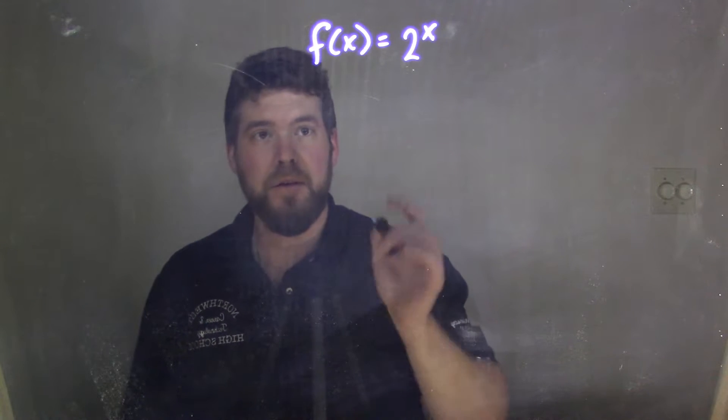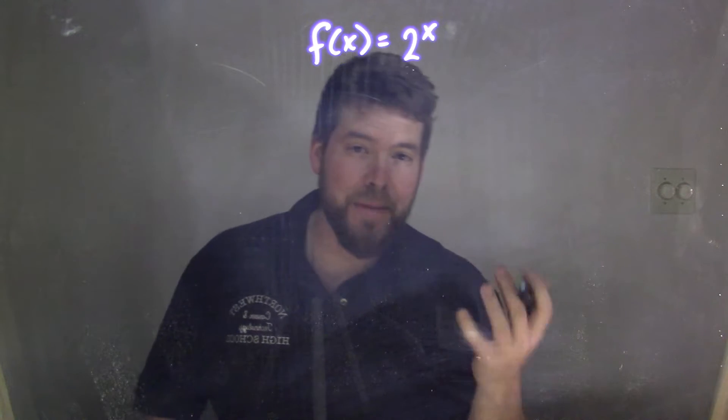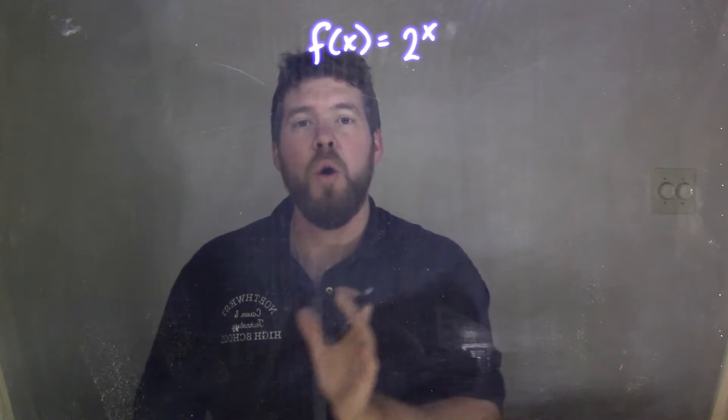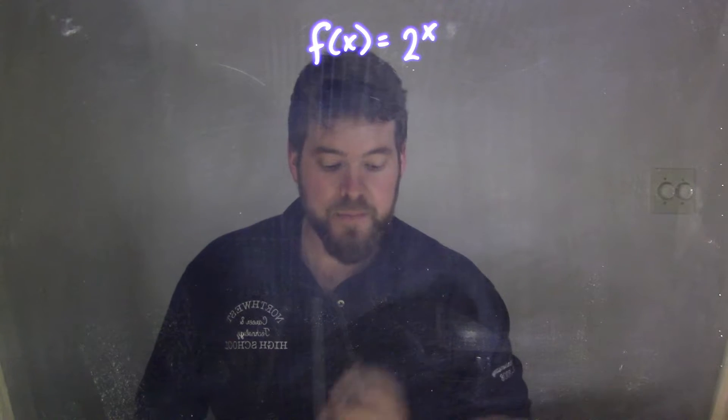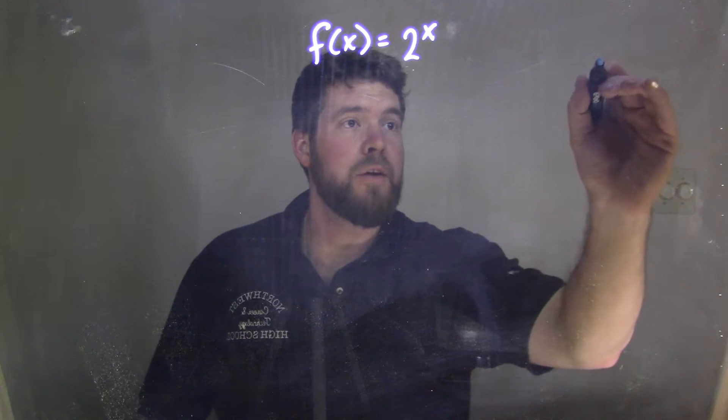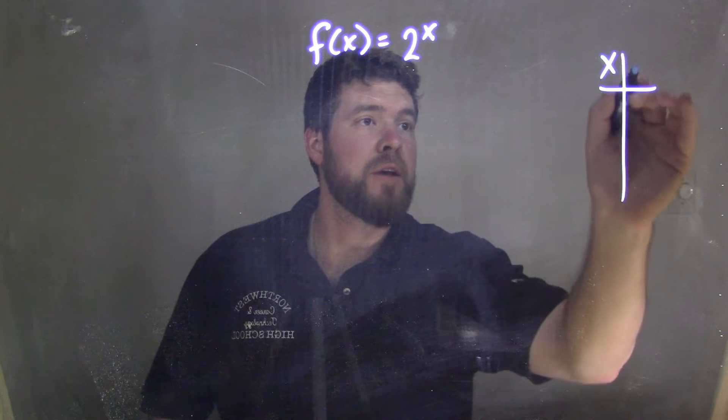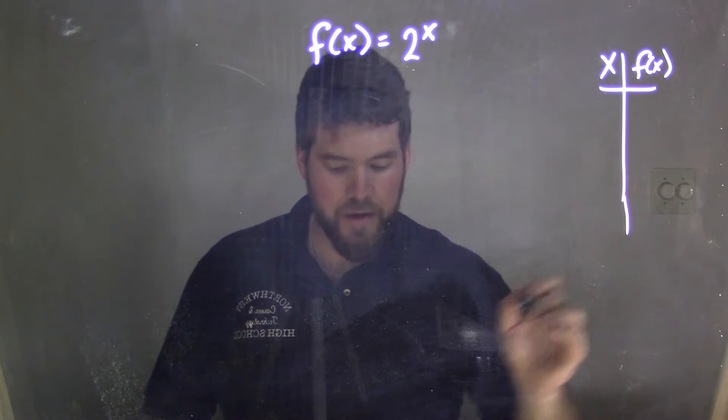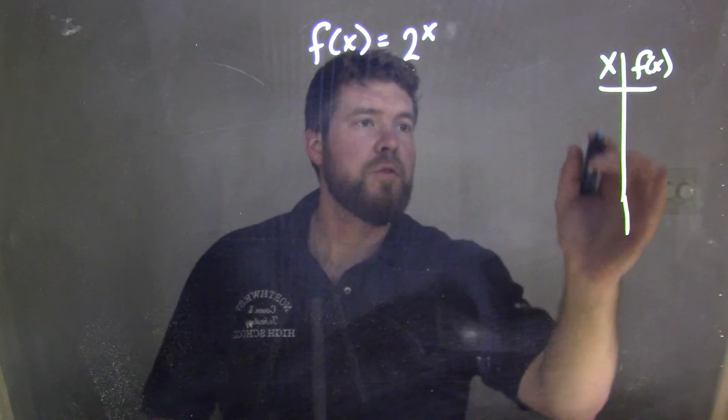So when we graph it, I like to make a table to help see where these points are going. So if I have a table here with my x values and f of x values, we're going to pick a few table values to help us out here.